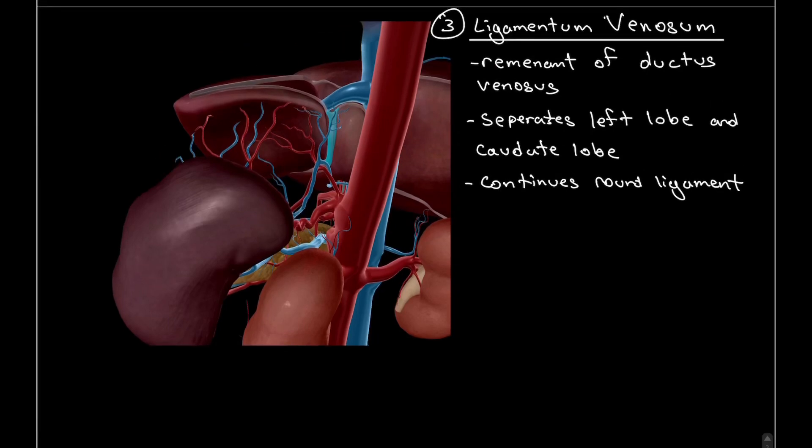Moving on to a posterior view of the liver, we can expose some major landmarks and structures. We can see the abdominal aorta here, the inferior vena cava in front of it, and also the common hepatic vein draining into the inferior vena cava. Highlighted in blue is the ligamentum venosum, which separates the left lobe of the liver and the caudate lobe, which sits on the right side.